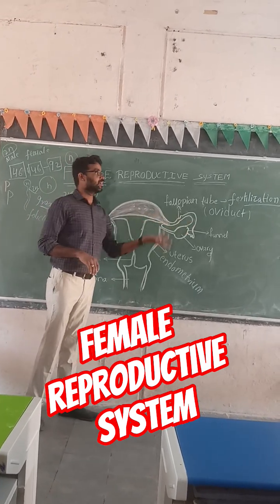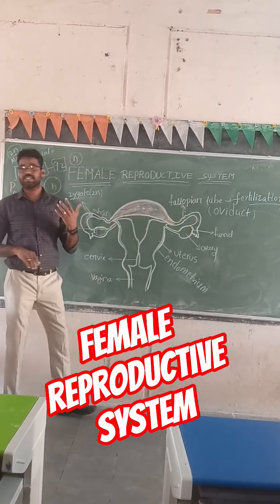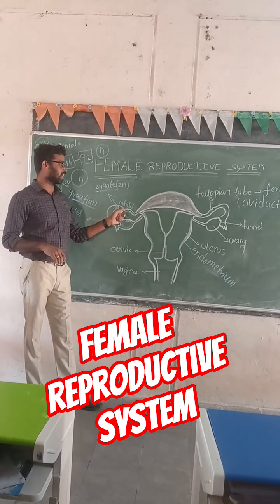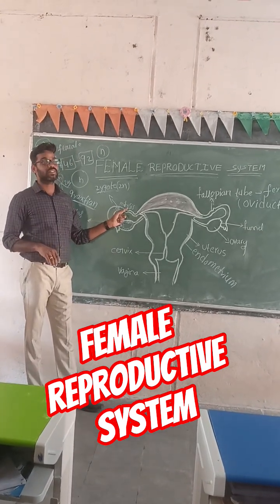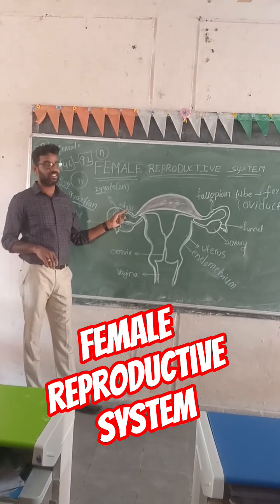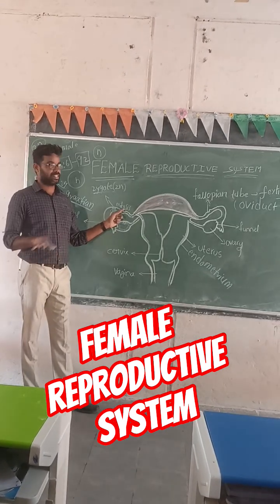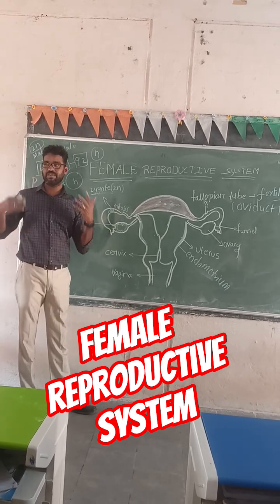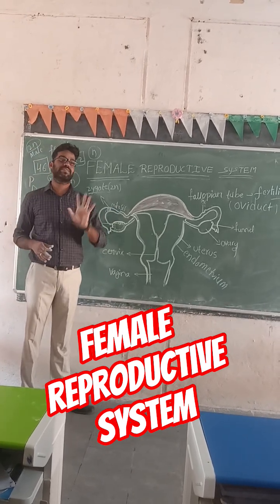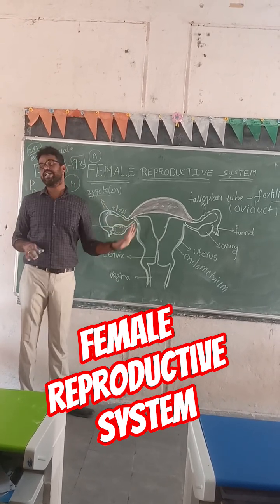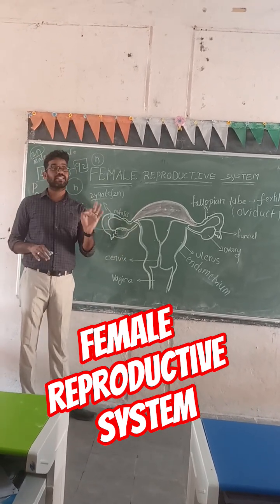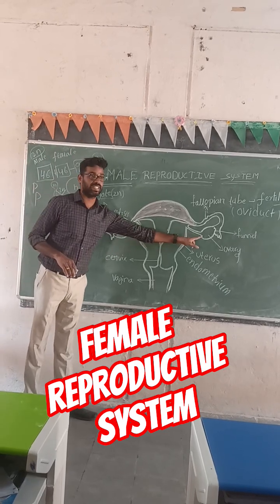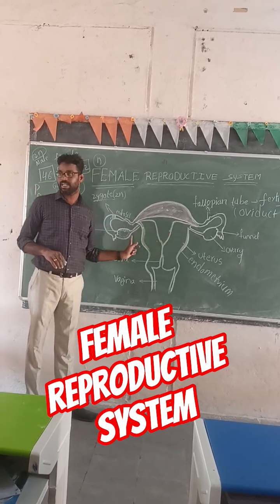After formation of the zygote, the zygote will participate in mitosis — not meiosis. Whenever we are growing, our body undergoes mitosis, not meiosis. Meiosis occurs in reproductive cells only.